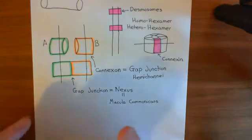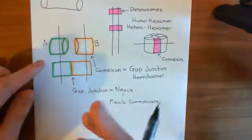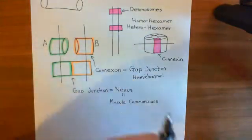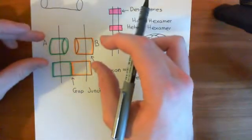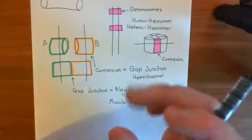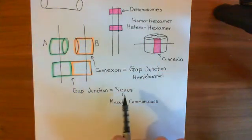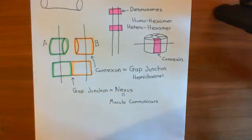We've now discussed that gap junctions are made up of these two connexons, or gap junction hemi-channels, which are provided by the two cardiac muscle cells which are going to form this electrical window. The two connexons join together to form a gap junction, which is also called a nexus or a macular communicant.